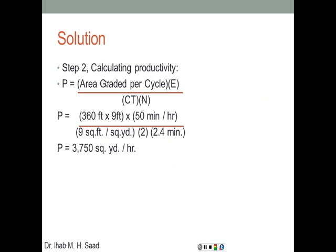Now we plug into the equation: productivity equals area graded per cycle times efficiency, divided by cycle time times number of passes. The area per cycle is 9 feet times 360 feet, times 50 minutes per hour efficiency, divided by 9 square feet per square yard, divided by 2 passes, divided by 2.4 minutes cycle time. This gives a total production of 3,750 square yards per hour. This concludes a brief introduction to graders — see you in the next lecture on another piece of construction equipment.